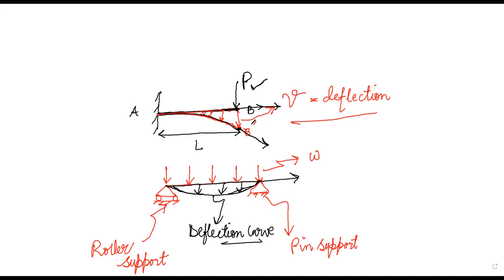Drawing a tangent at point B prime on the deflection curve, this tangent is now at an angle theta with the initial axis of the beam. This angle is known as the slope. Understanding the slope and deflection of the beam is very important in the design and proper functioning of the beam. The question is: how do we find the deflection and how do we calculate the slope in the beam?